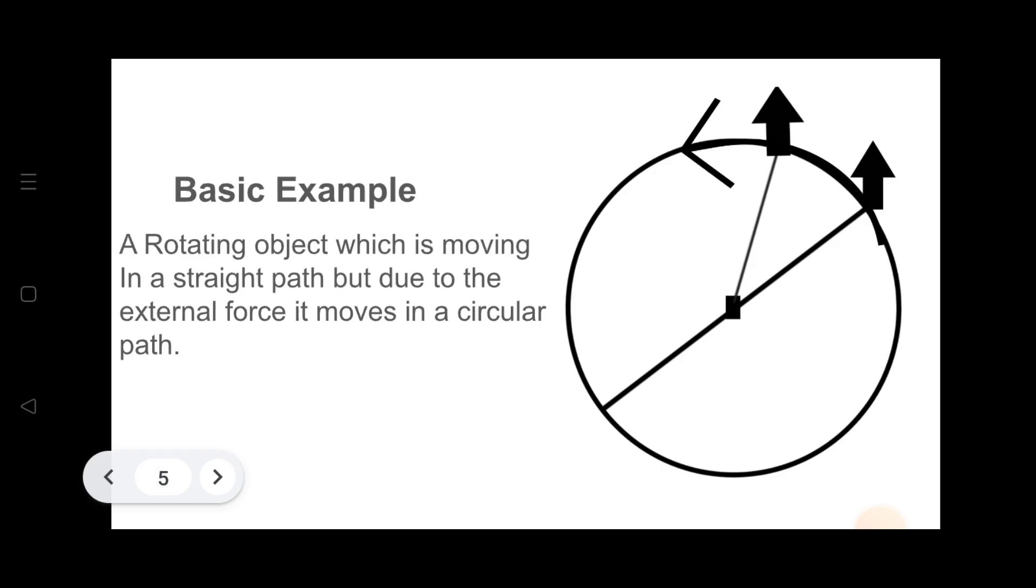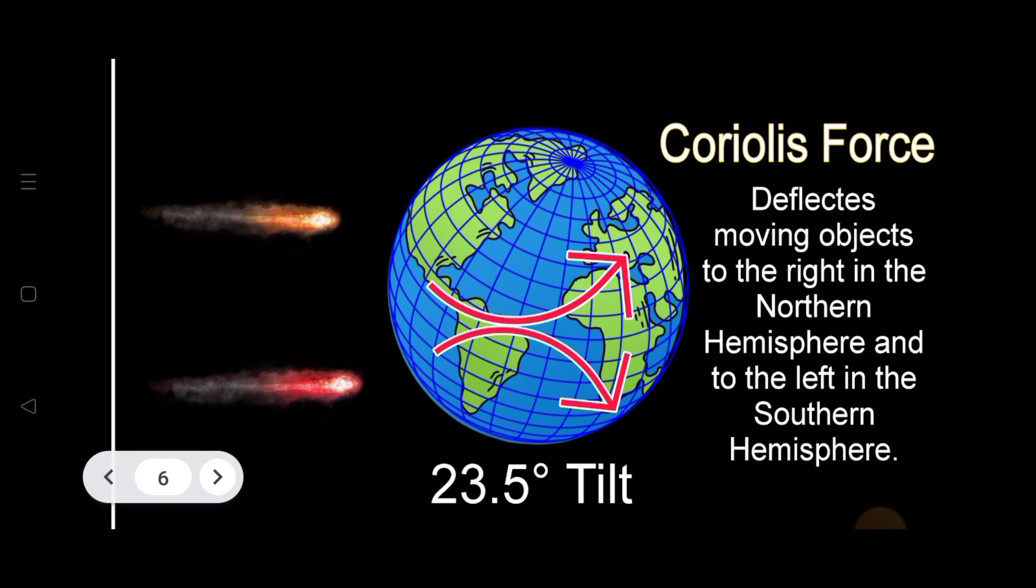Understood? Now, when a meteorite enters the atmosphere of the Earth, it tries to continue in a straight line. But as it moves through the rotating atmosphere, it is deflected either to the right or to the left due to the rotation of the Earth.